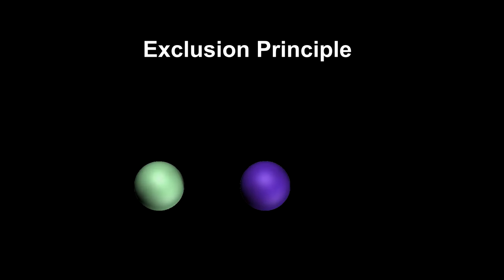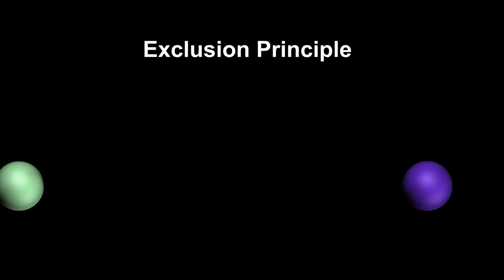In classical physics, the exclusion principle states that no two objects can occupy the same space at the same time.